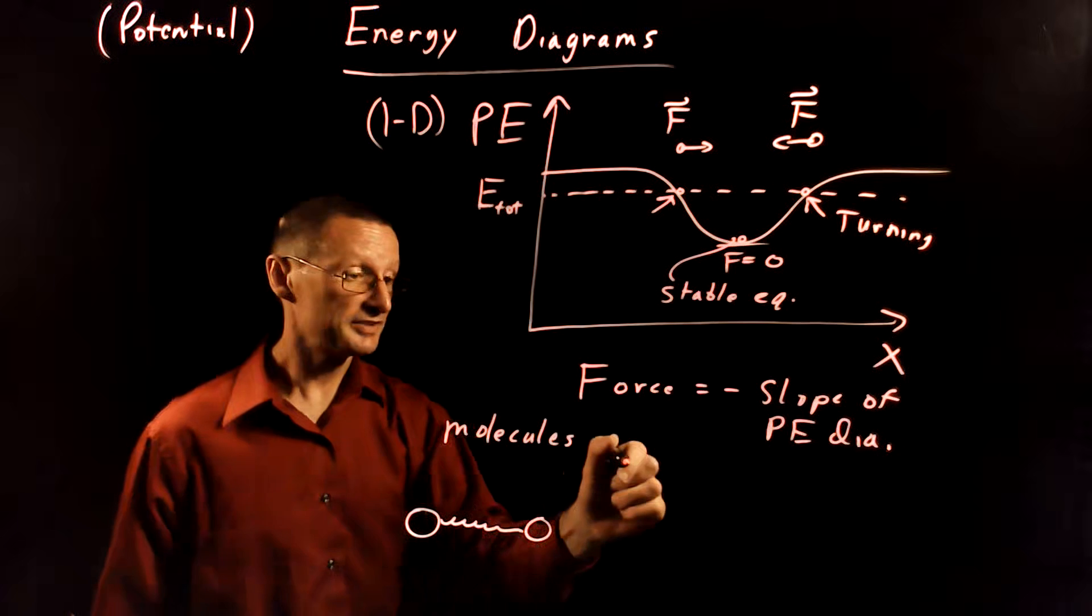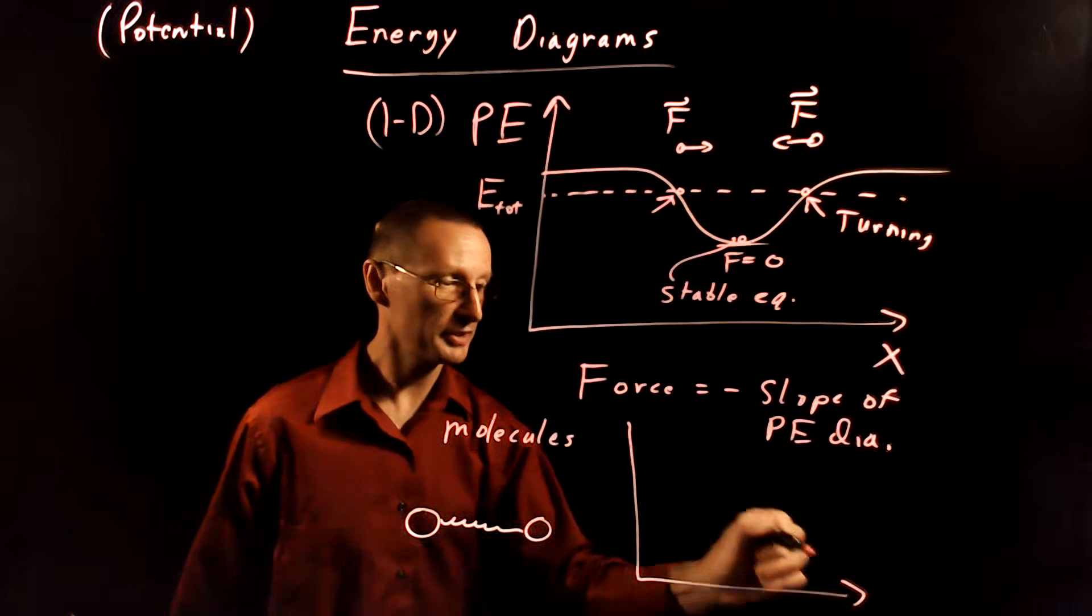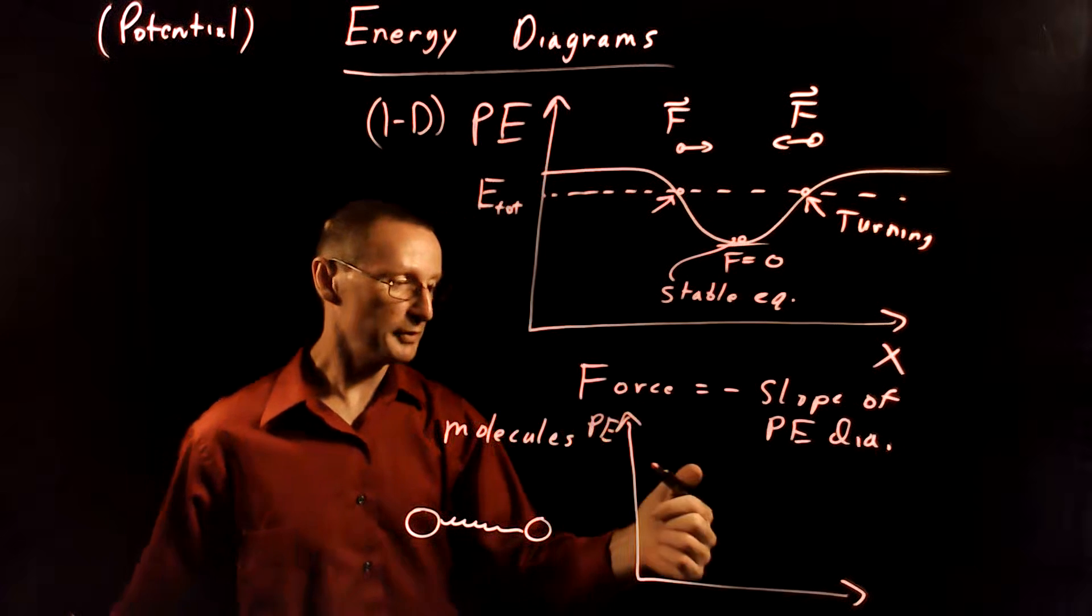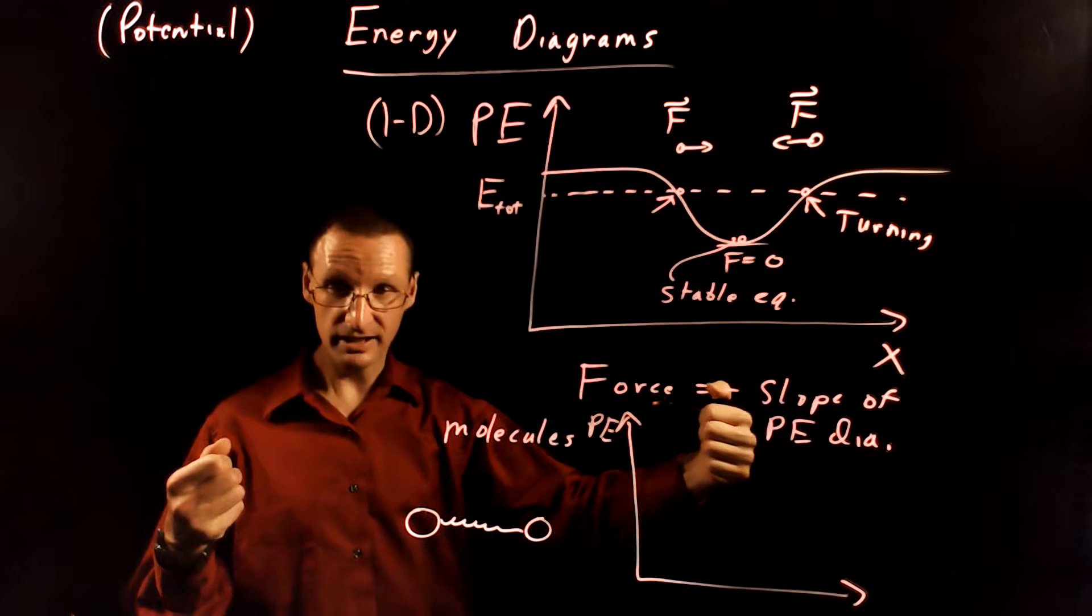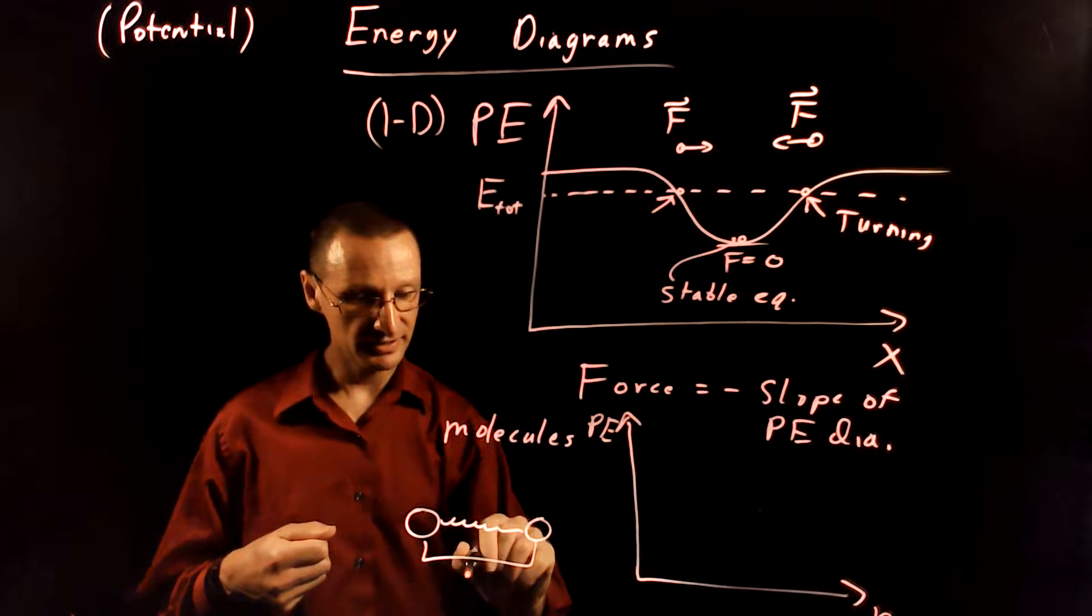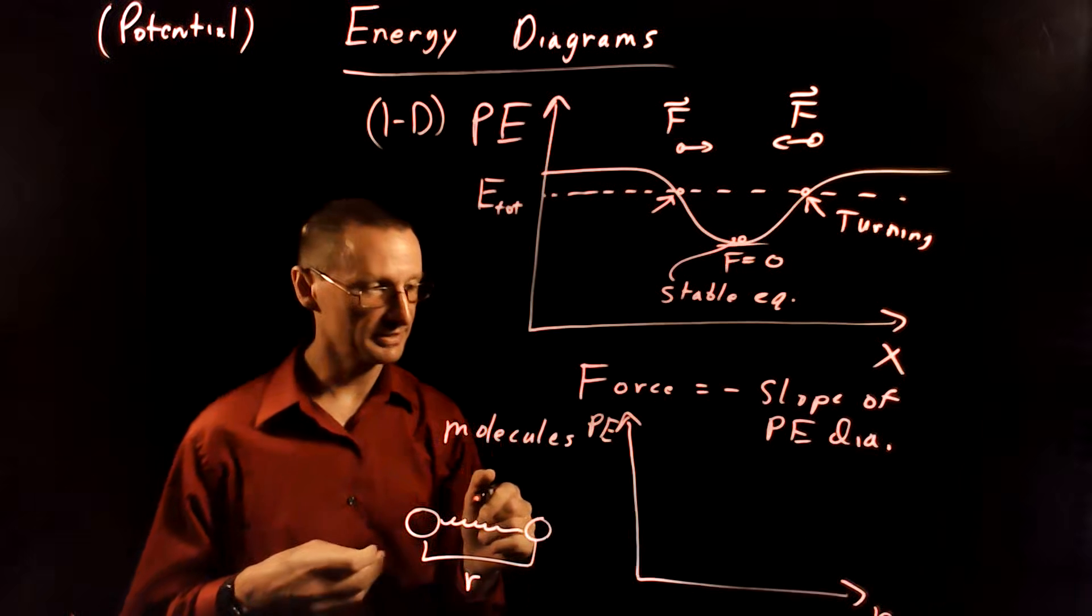And so what that potential energy diagram looks like is, well, if you have them separated a long ways apart, they're going to want to attract. So this is the separation distance here, R. That's the variable there.